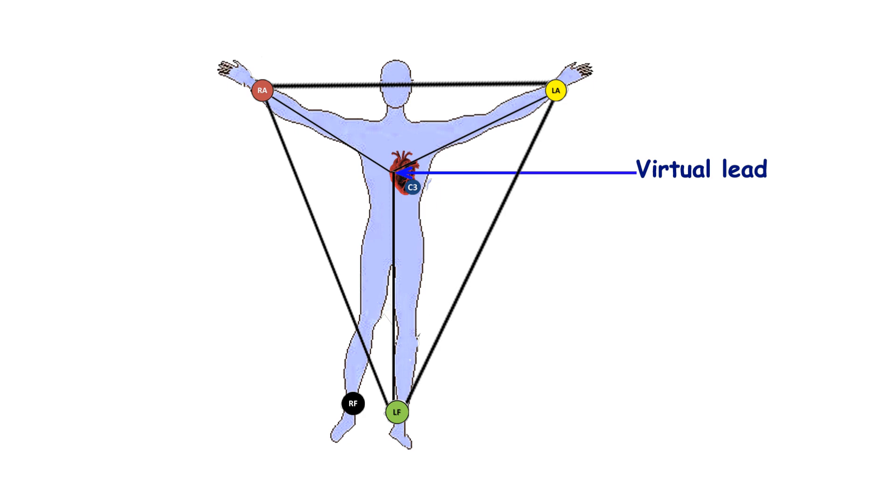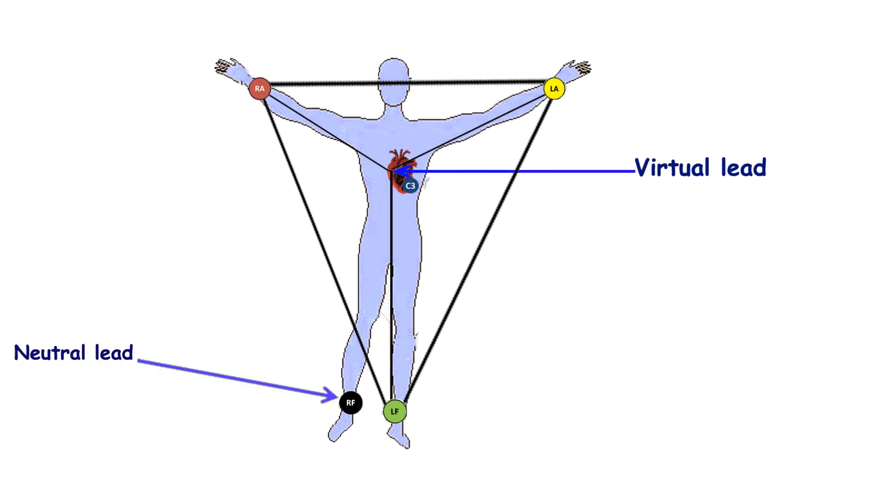The last one has a potential equal to the average potentials of three limbs: right arm, left arm, and left leg. The electrode attached to the right leg is used as a neutral lead.